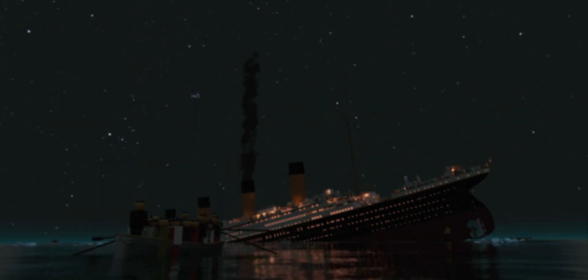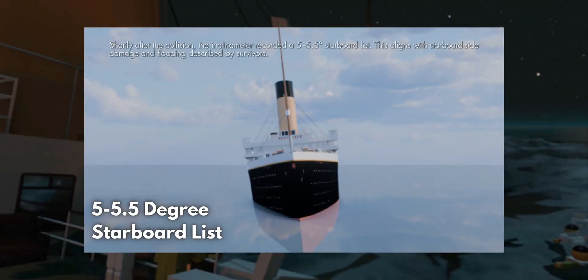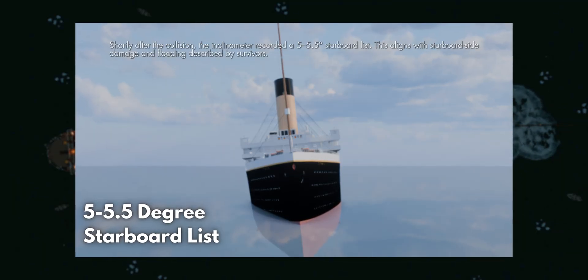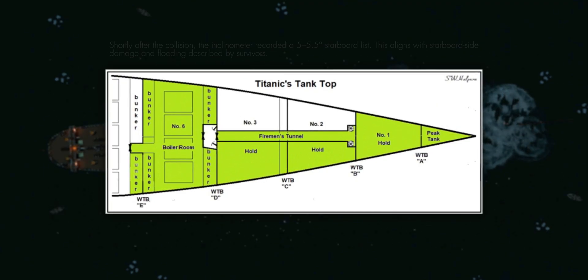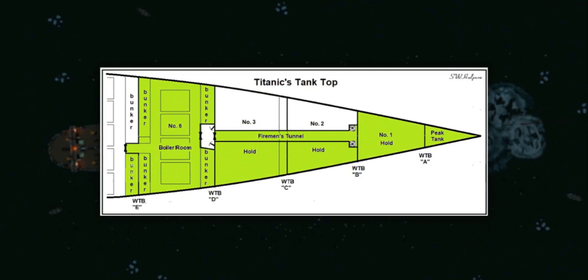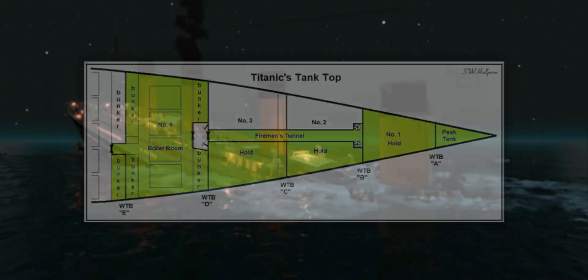Around 11:45 to 11:50 p.m., our next key moment: the immediate post-collision starboard list. Within 5 to 10 minutes of the collision, the inclinometer recorded a starboard list of approximately 5 to 5.5 degrees. This aligns with the damage pattern — the iceberg struck the starboard side, flooding the peak tank, No. 1 hold, the starboard portions of Holds 2 and 3, the Fireman's Passage, Boiler Room 6, and the starboard coal bunker in Boiler Room 5. Survivor accounts consistently described flooding concentrated on the starboard side, causing the ship to lean in that direction.